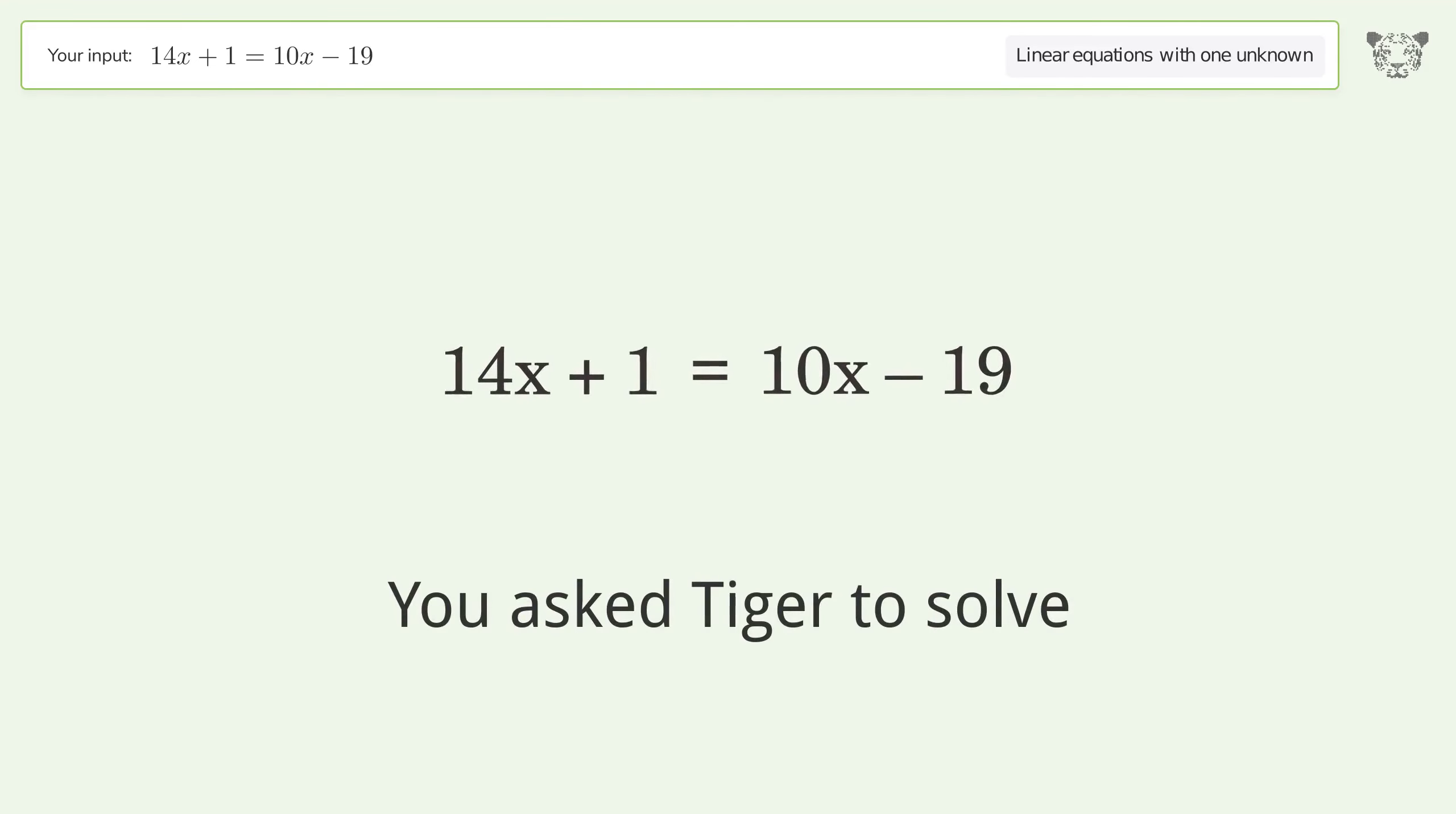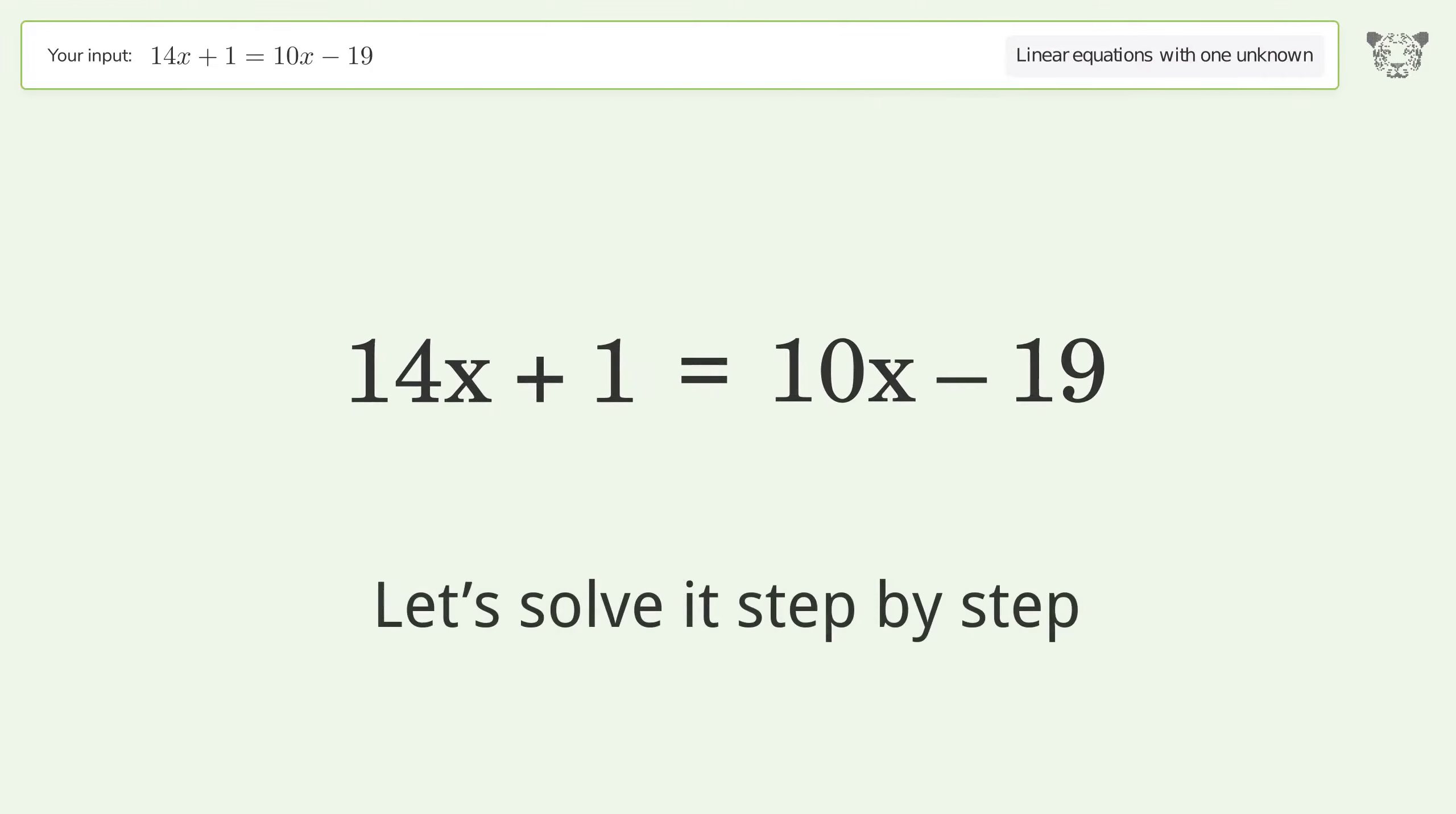You asked Tiger to solve. This deals with linear equations with one unknown. The final result is x equals negative 5. Let's solve it step by step.